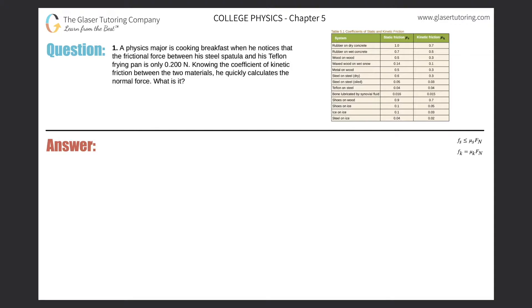Number one, a physics major is cooking breakfast when he notices that the frictional force between his steel spatula and his Teflon frying pan is only 0.2 newtons. Knowing the coefficient of kinetic friction between the two materials, he quickly calculates the normal force. What is it?